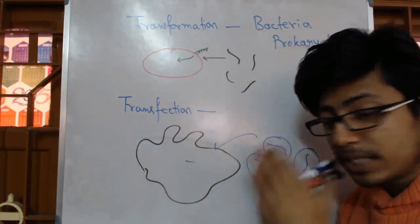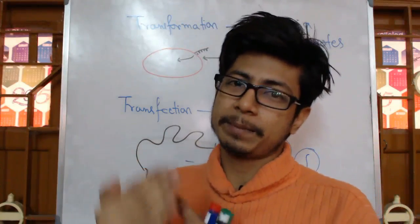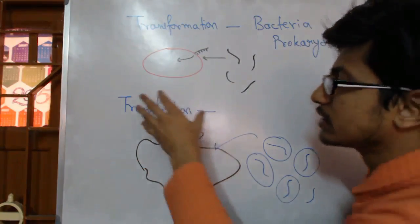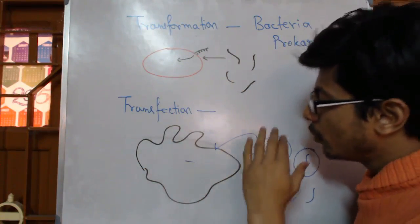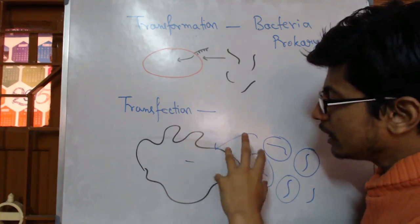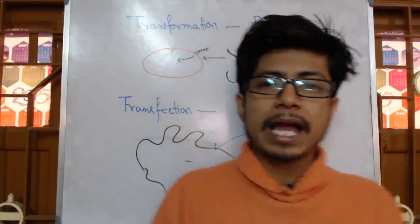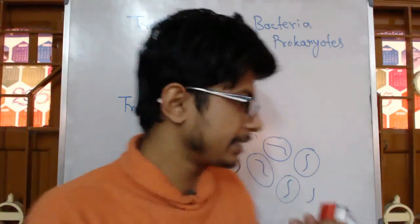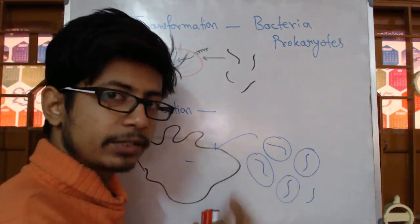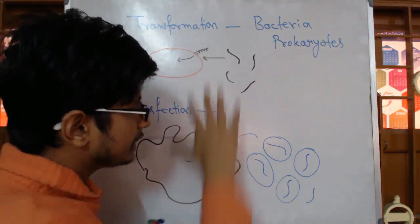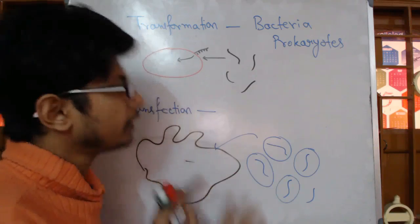But in case of eukaryotes, we need to make sure that we deliver it exactly inside the nucleus so that it can be integrated. So in most cases of the transfection process - that is the delivery of genes in eukaryotes - we rely on using viruses. Because retroviruses, you know, have the strategy or tendency to integrate their genome with the host genome. So that's why we use retroviruses to insert the genome directly. So this is the fundamental difference.